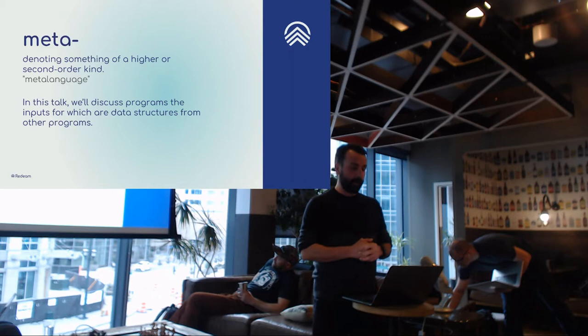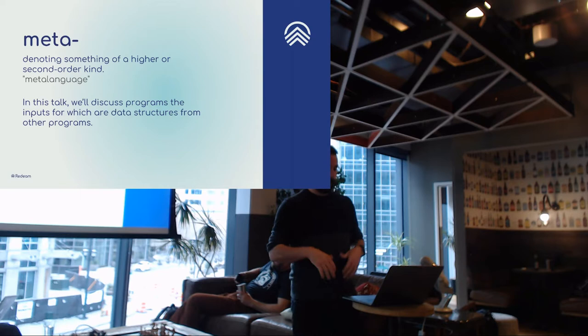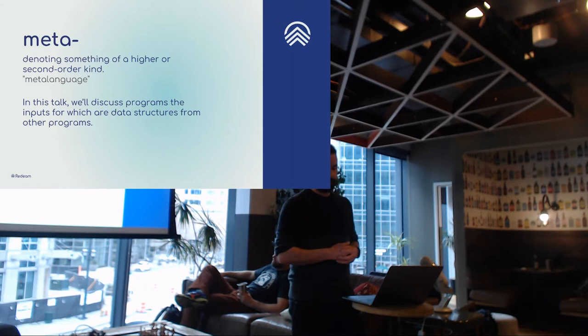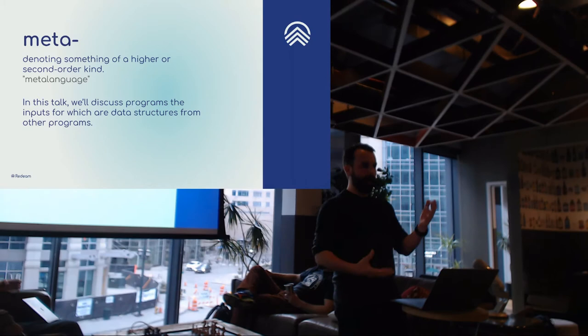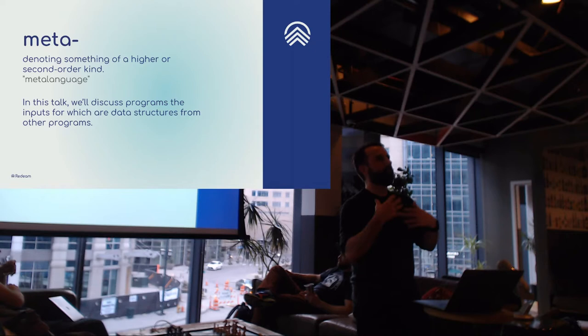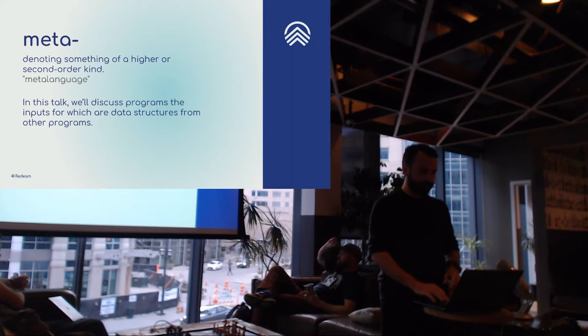A couple of definitions to start out with. 'Meta' is something of a higher order kind — in this case, we're talking about programs whose input is the data from other programs. This makes heavy use of the reflection API. We're not using AST here, we're not rewriting source code. What we are doing is rewriting data, basically, and finding multiple uses for data.